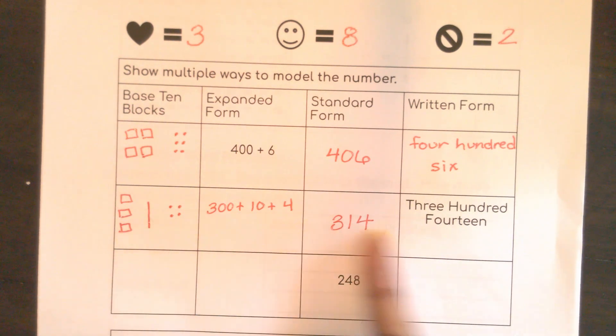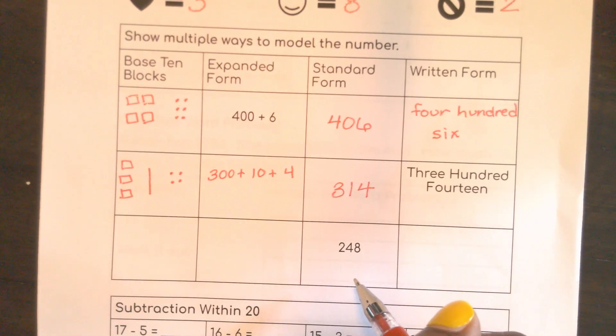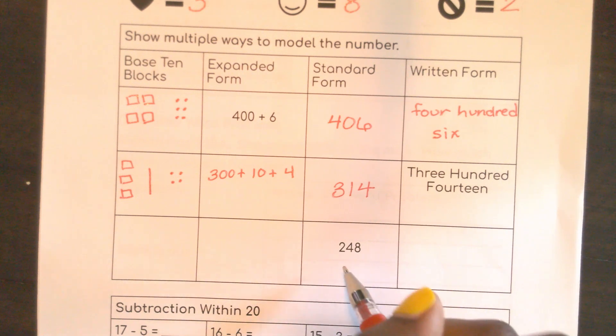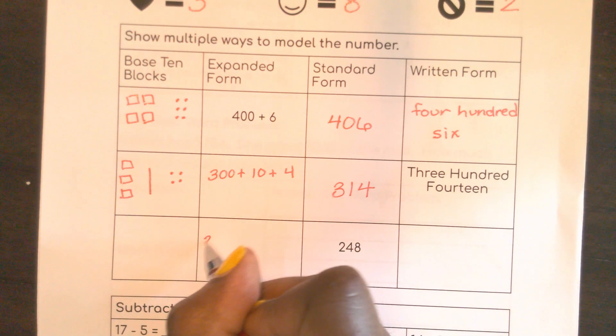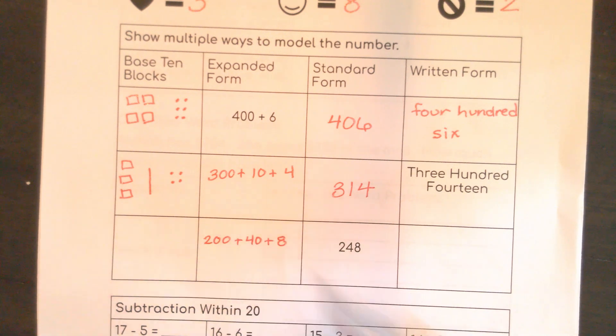See? You're showing the same number in multiple ways. And yesterday, we actually used some of these ways to do actual subtraction. So it's good to be able to see the number in different ways. And the last one for showing the number in multiple ways, I have 248. That is written in standard form. But I could take it and write it in expanded form, 200 plus 40 plus 8.